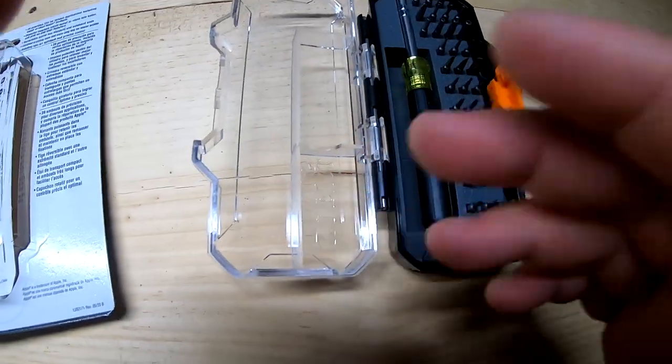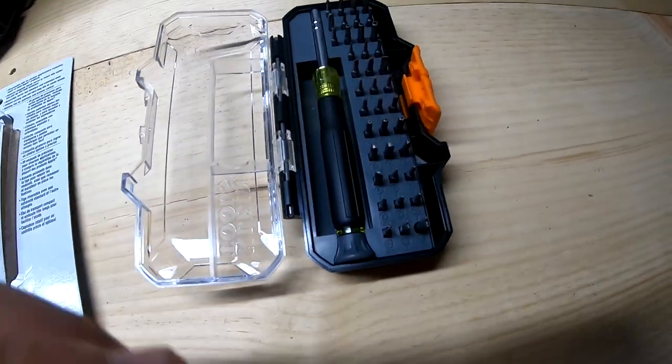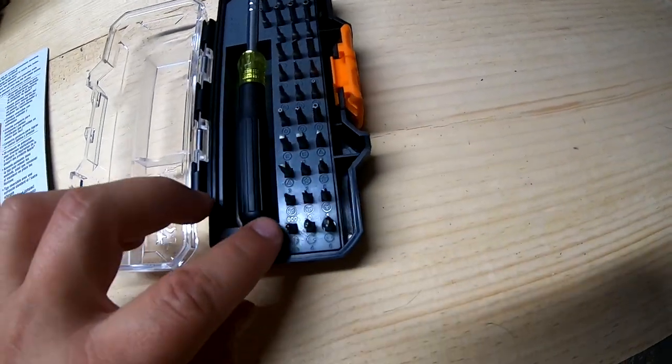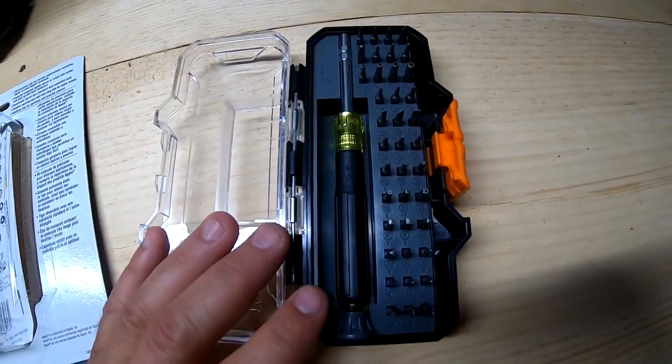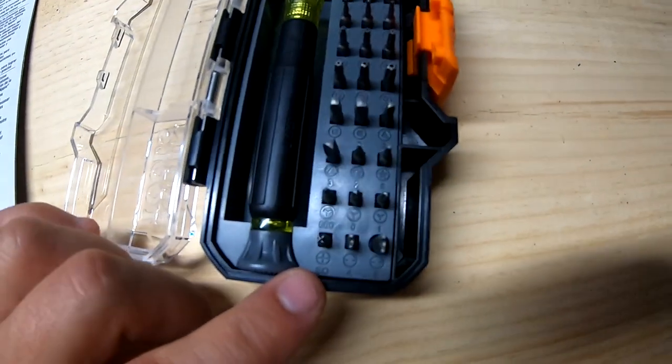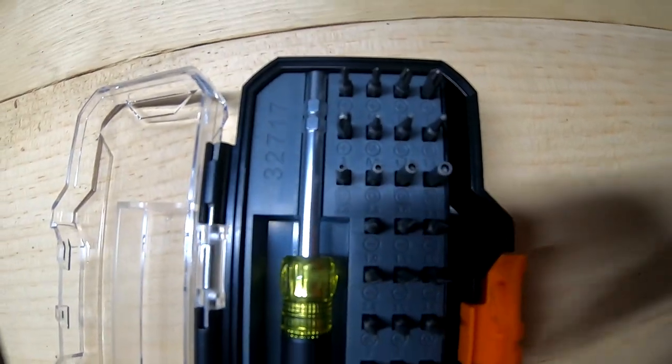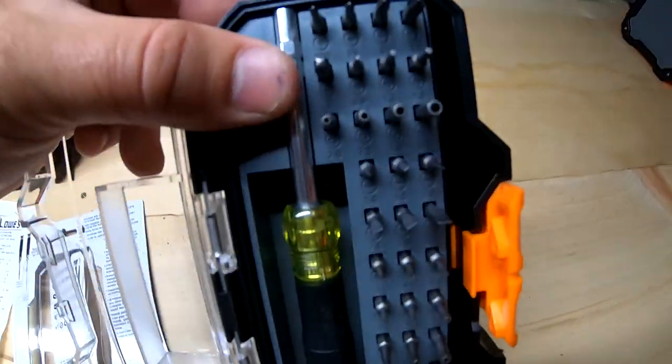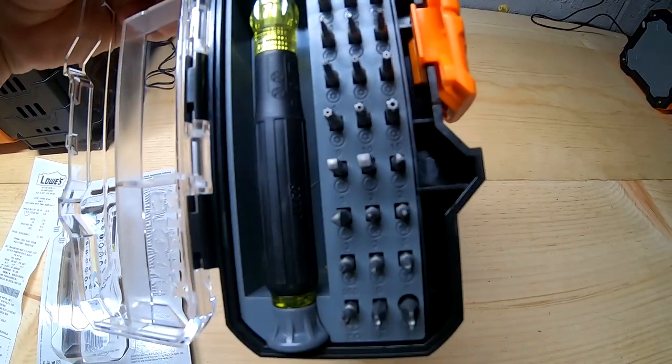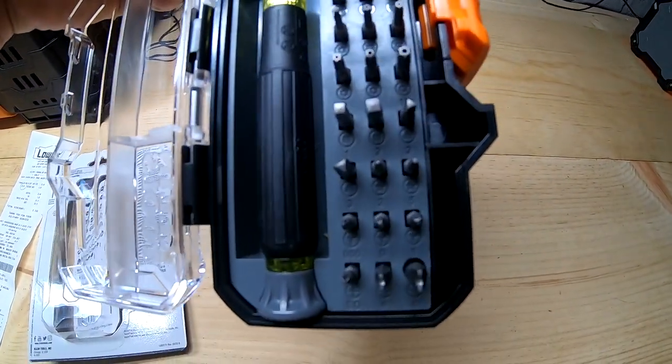Anyways, let's get to the details. So it's got 39 precision bits for various applications and also for Apple products. I'm not familiar with Apple products, so I'll take their word for it. You all can let me know whether you see them. This thing does come with quite a few bits. I ain't gonna go through and count them all.